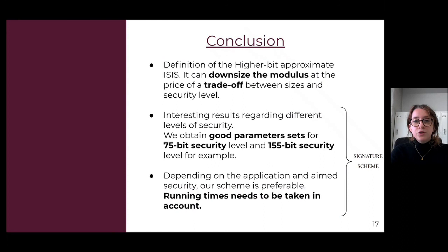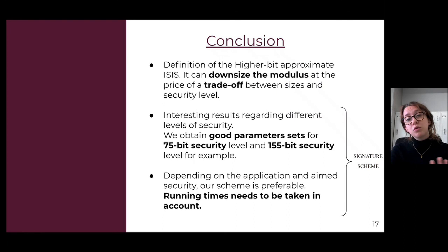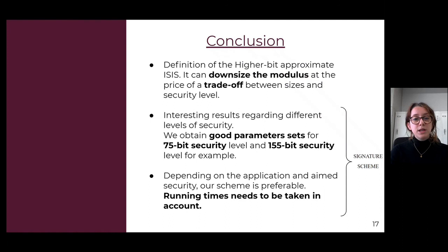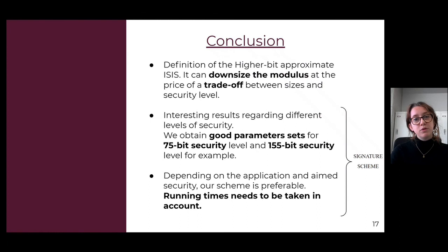To conclude, in this work we defined a new problem named the higher-bit approximate ISIS. This new problem allows us to work in the higher-bit approximate setting, downsizing the modulus and working with smaller moduli in the objects while still having the original modulus in the construction. However, this setting implies a trade-off between object sizes and security level. We also did an application to a signature scheme and got interesting results at different security levels — good parameter sets for 75-bit security and also 155-bit security. To lessen the trade-off between size and security level, running times must still be taken into account. Thank you for listening.